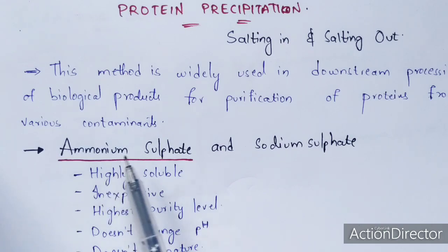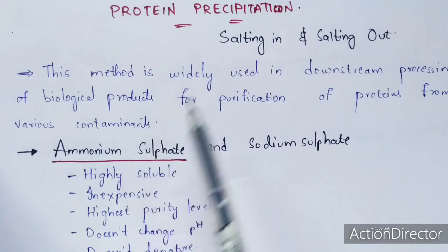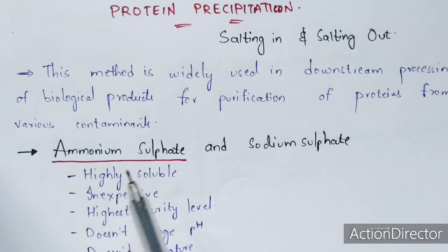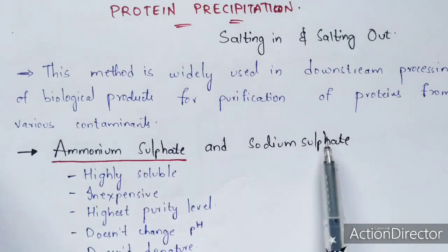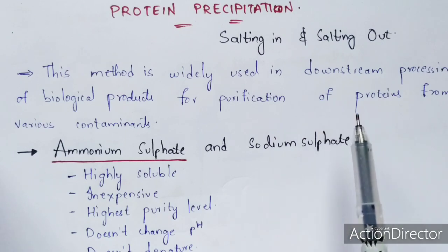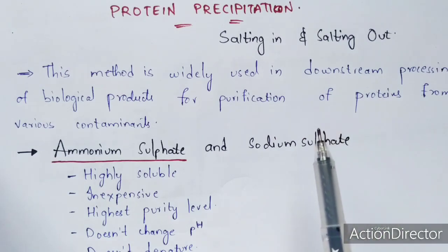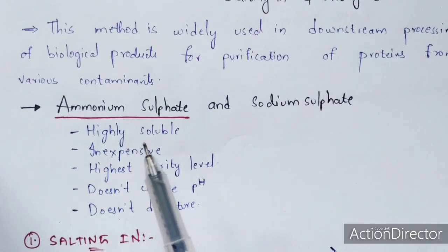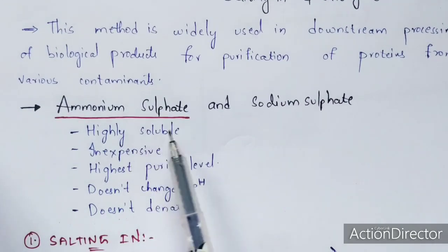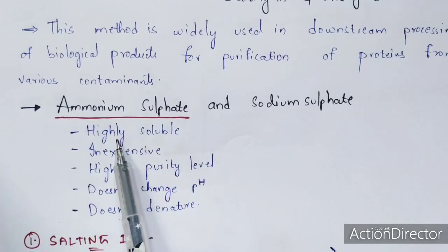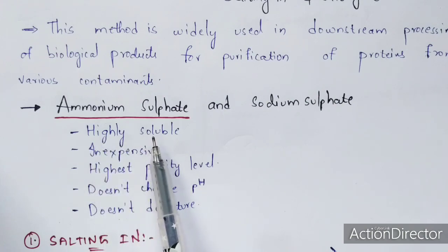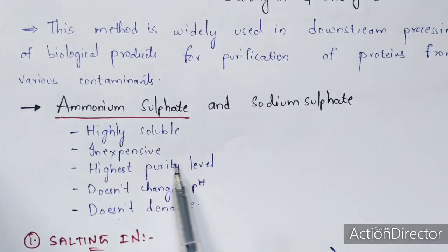Ammonium sulfate is preferred over sodium sulfate because most of the useful properties are exhibited by ammonium sulfate. When ammonium sulfate is used in the precipitation process, 100% pure form of proteins can be obtained. But when sodium sulfate is used, only 75% purity can be achieved. Ammonium sulfate is highly soluble and inexpensive, and it gives the highest purity level of proteins.